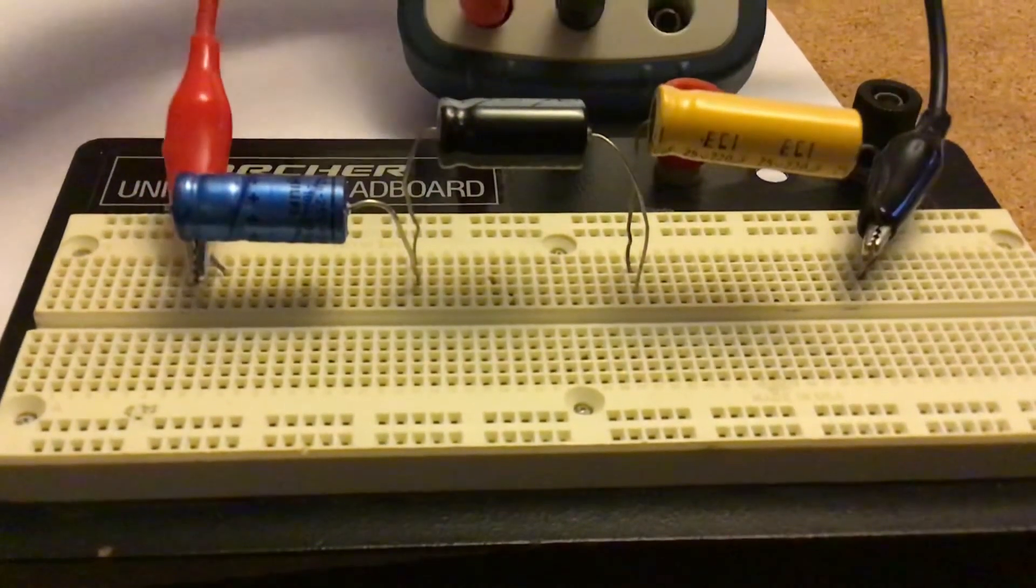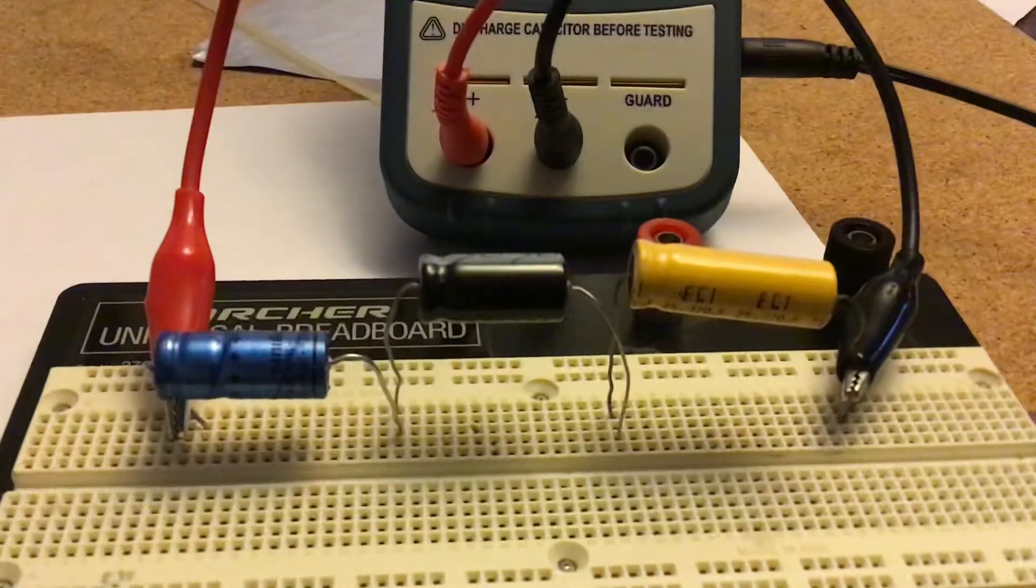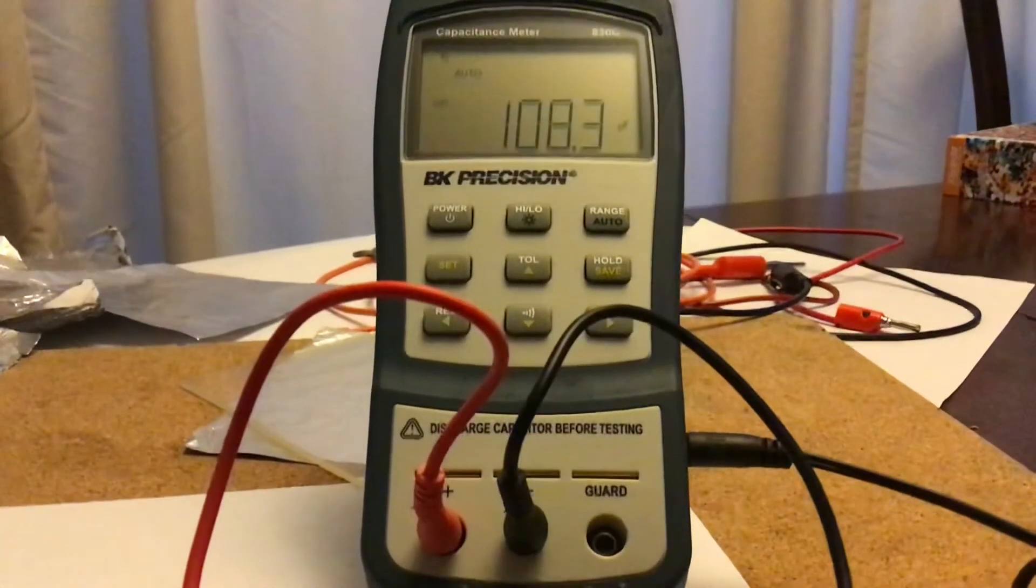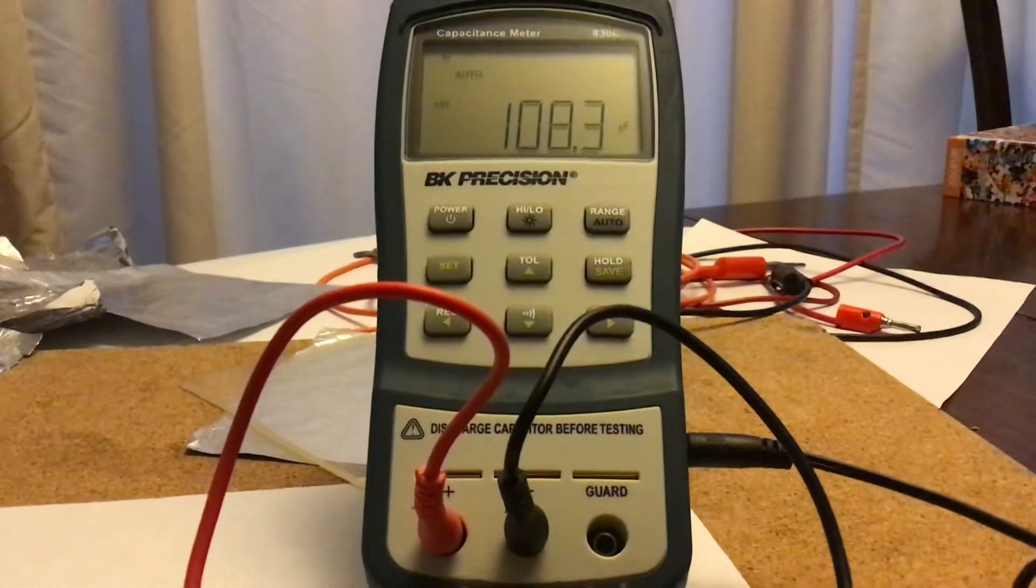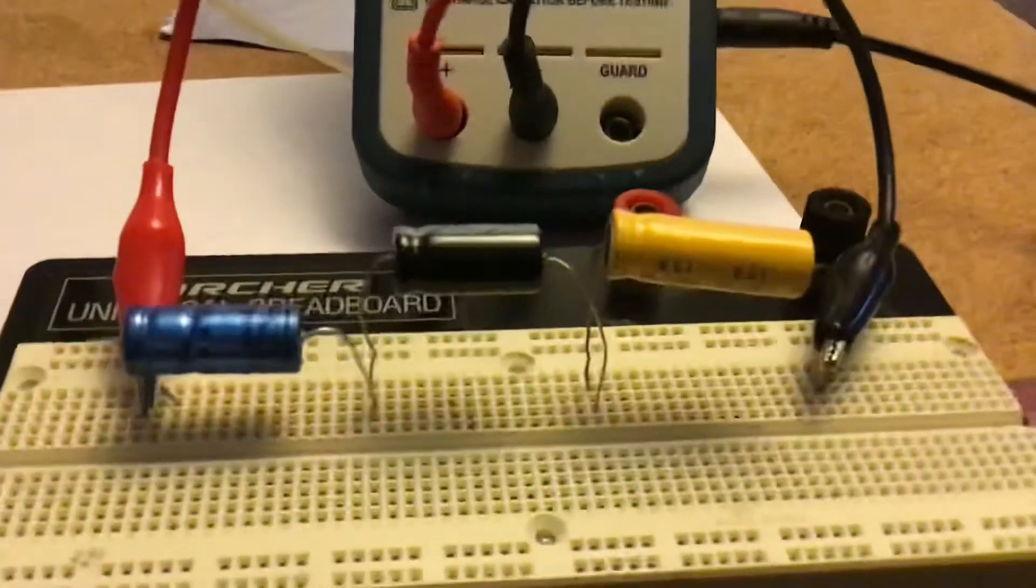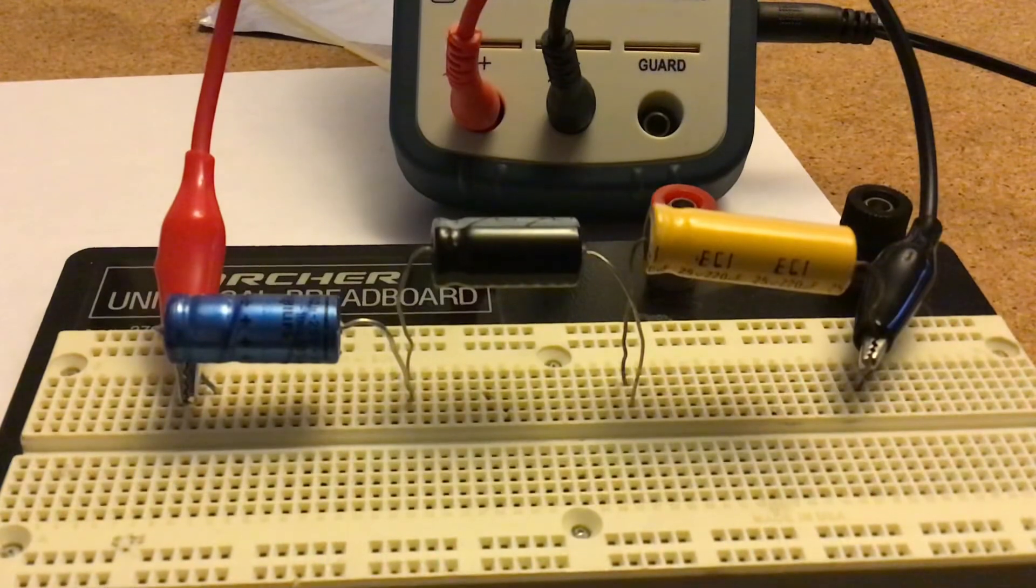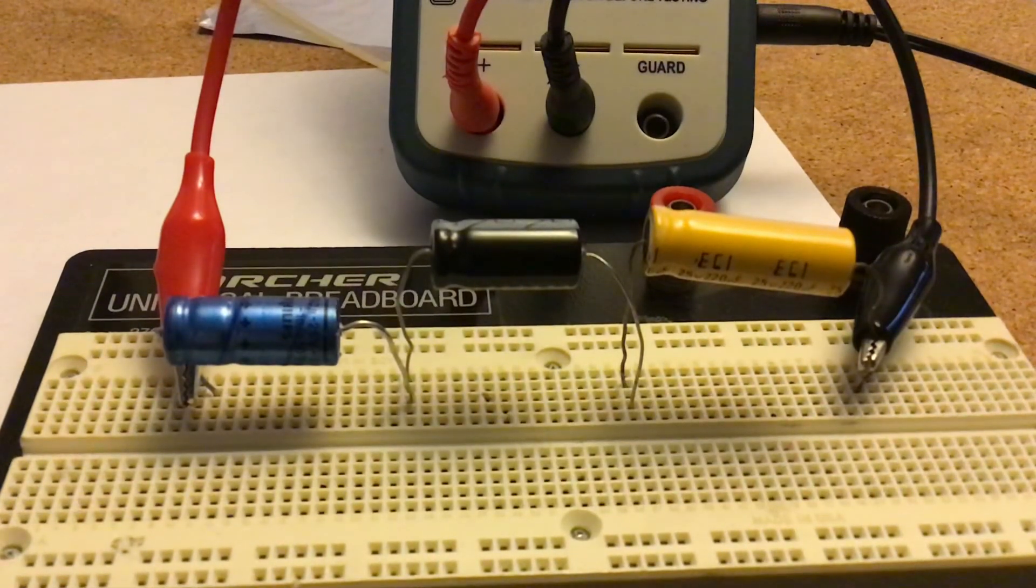My meter just turned off here. 108.3. I think that's what we said. Then you find the percent difference between this value and your calculated values. So, now what we're going to do in the next video is do capacitors in parallel.